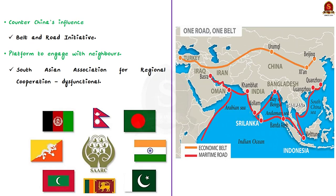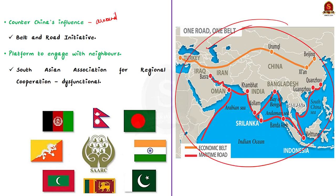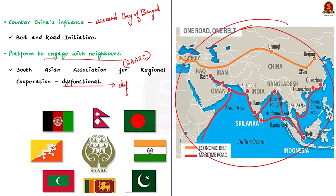The second significance is that BIMSTEC allows India to counter China's influence in countries around the Bay of Bengal region. China's influence is increasing due to the spread of its Belt and Road Initiative, so the BIMSTEC organization helps India to counter China's presence in these countries. Additionally, BIMSTEC serves as a platform for India to engage with its neighbors, which is relevant because SAARC is becoming dysfunctional because of the differences between India and Pakistan. So BIMSTEC is the ray of hope for India.